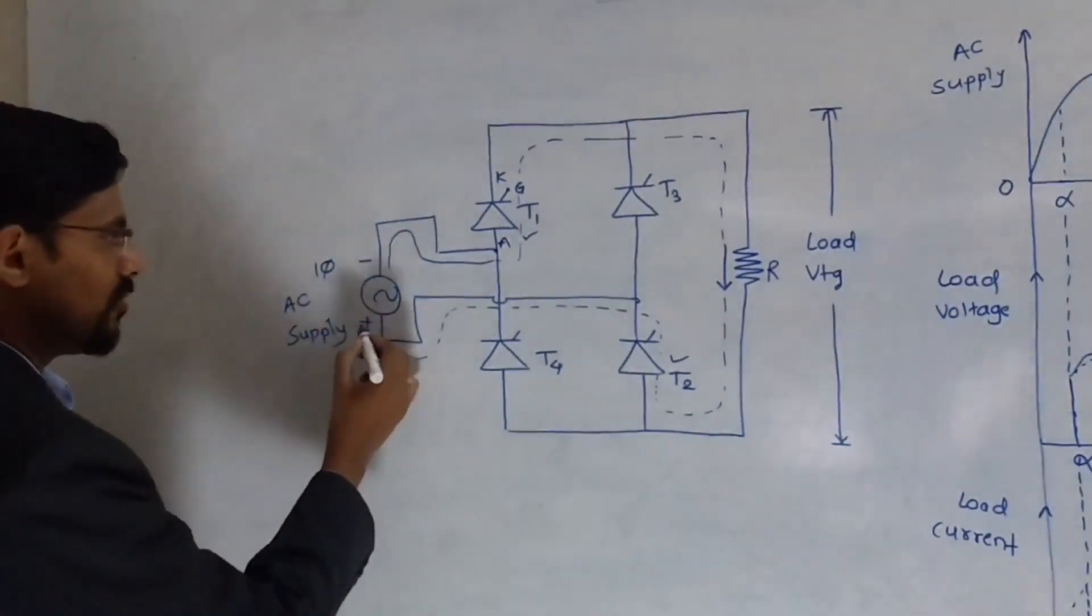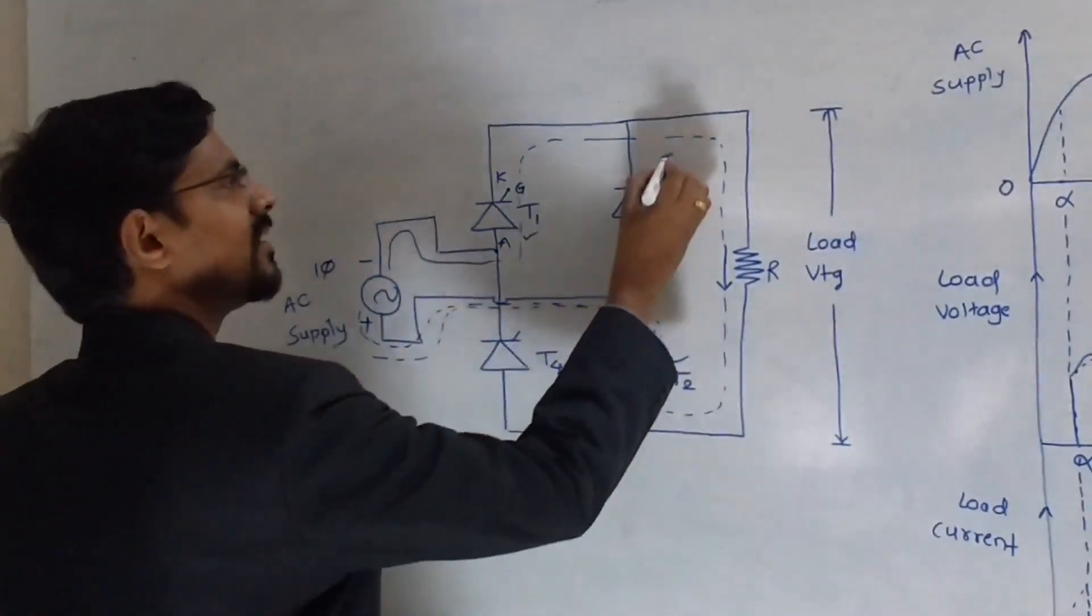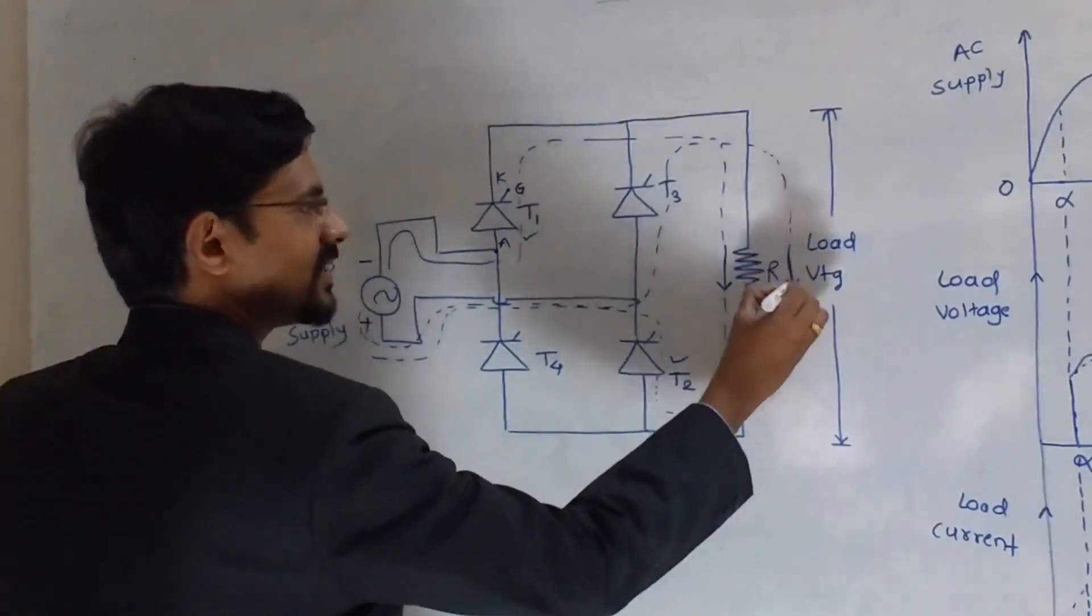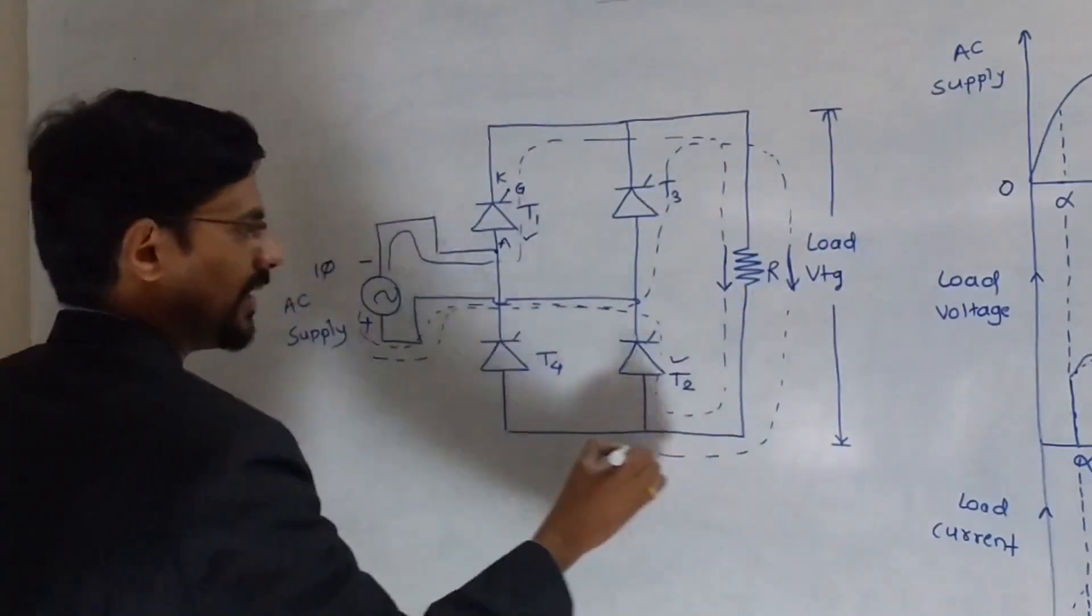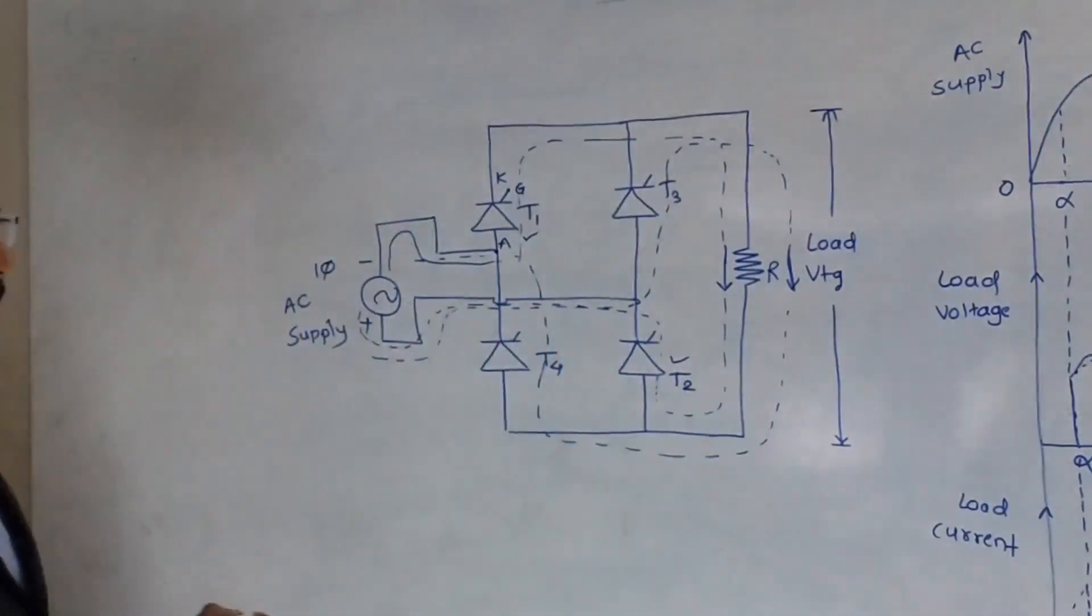So current will flow from this positive, then this T3, then this load like this. Then T4 and then back to this negative half cycle. If you observe the waveform.